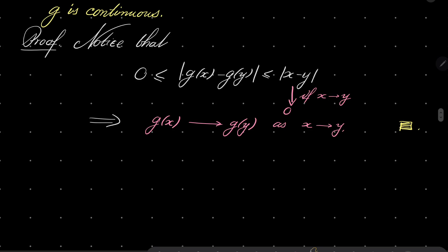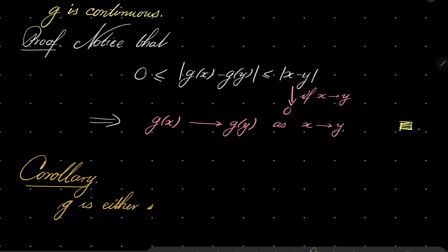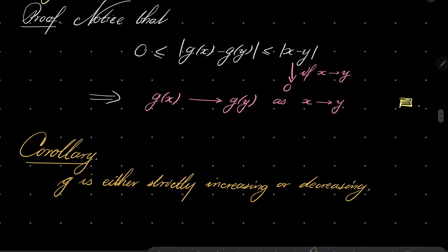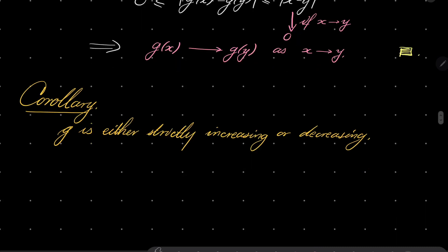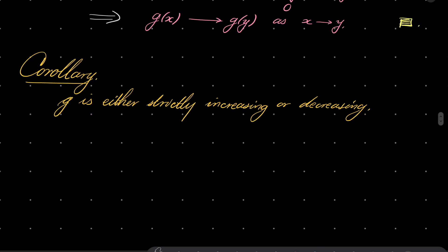From these two claims we immediately have a corollary: since g is both continuous and injective, g is either strictly increasing or strictly decreasing. This is a well-known fact from mathematical analysis. Now, let's take our functional inequalities once again and consider two cases separately.